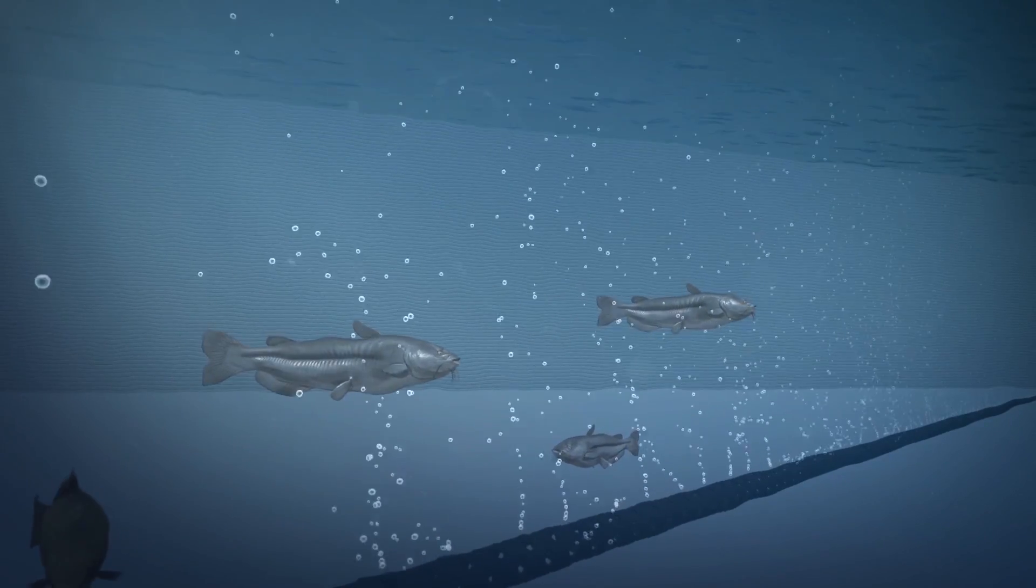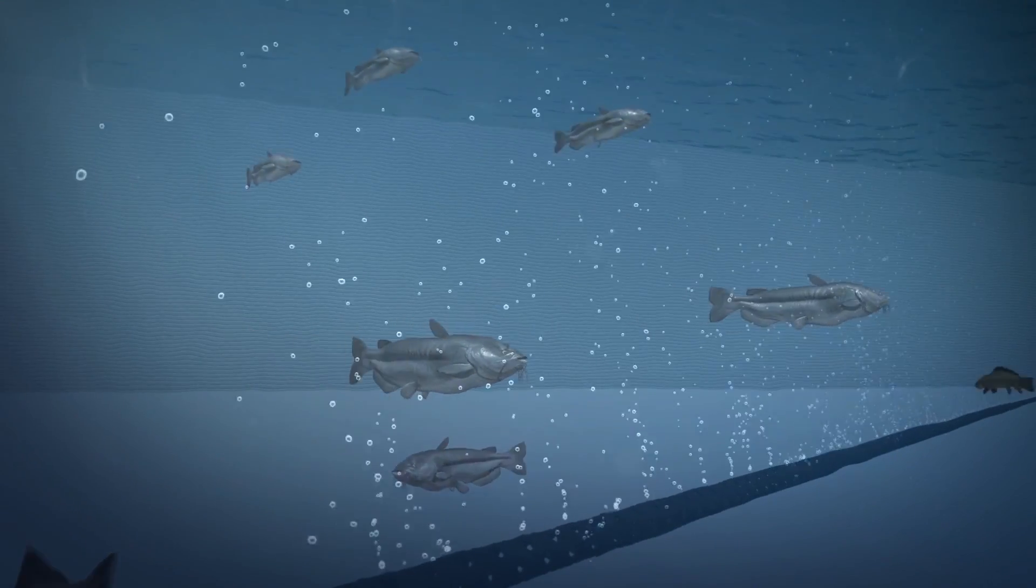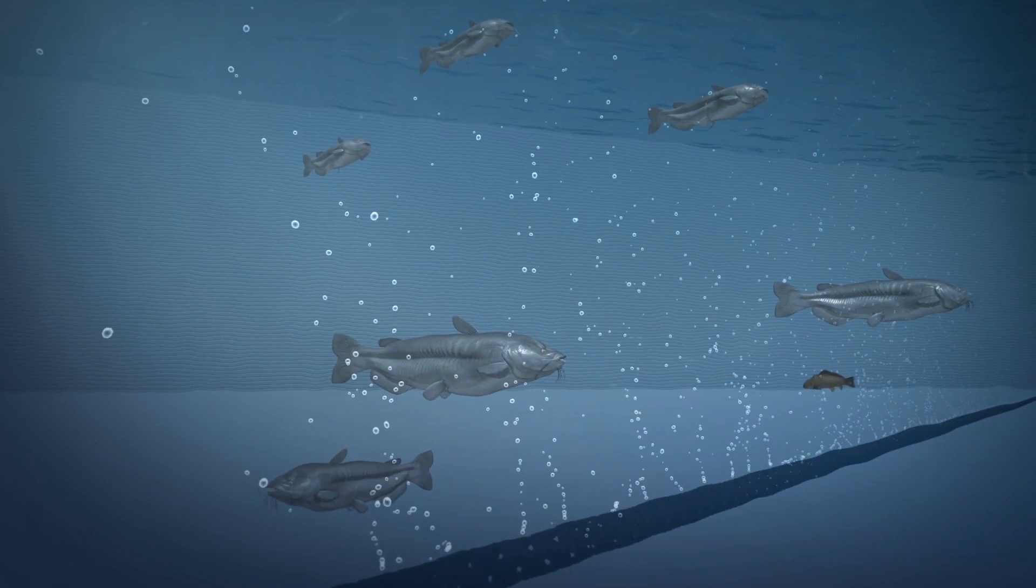The company also claims that the bubble barrier pumps oxygen into the river, which prevents algae blooms and bolsters the aquatic ecosystem.